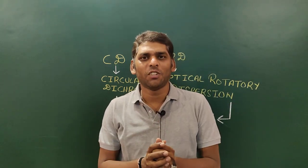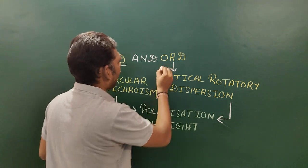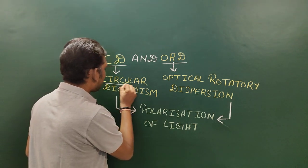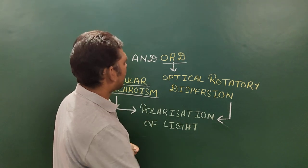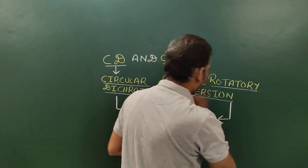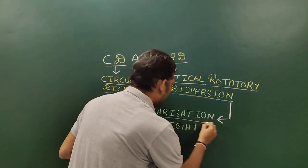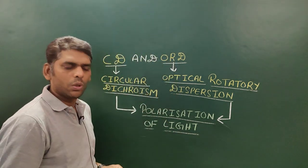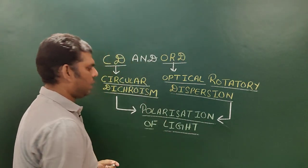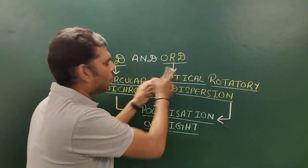Welcome friends, welcome to another video lecture of Bio Vision Academy. Today we are going to discuss about CD and ORD. The full form of CD is circular dichroism, whereas the full form of ORD is optical rotatory dispersion. CD and ORD depend on the polarization of light, so to understand CD and ORD, we should have an idea about the polarization of light.